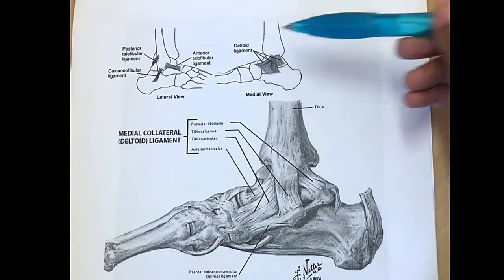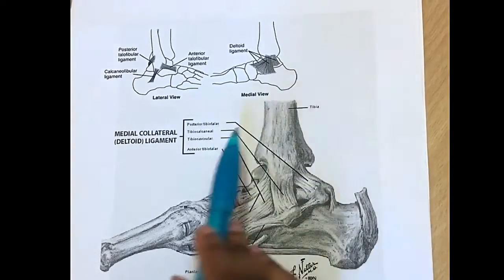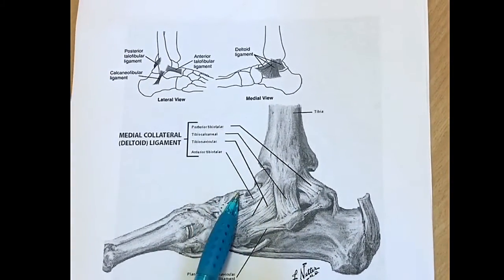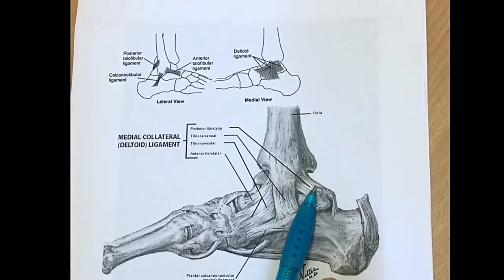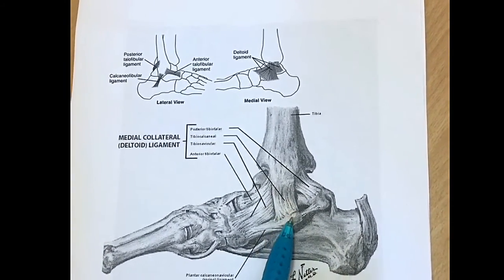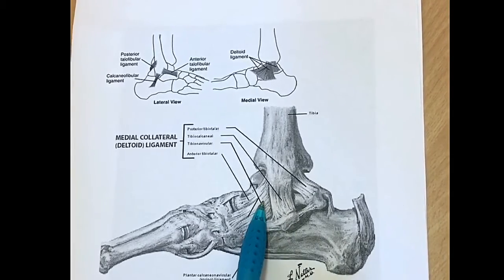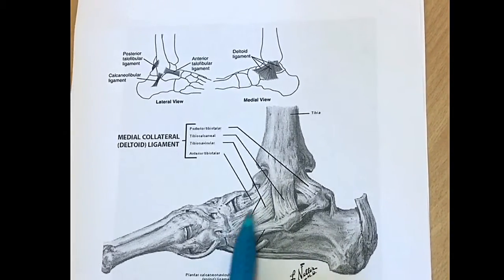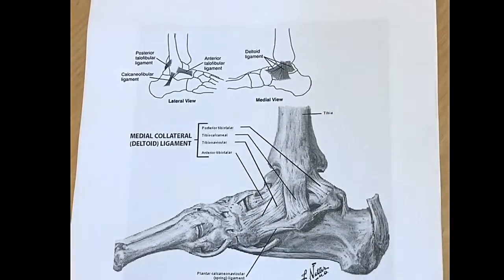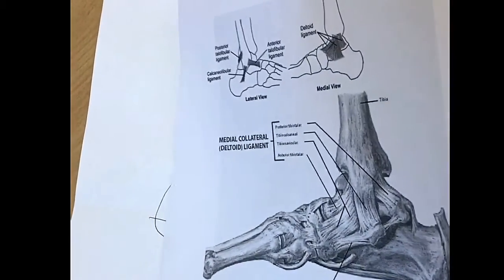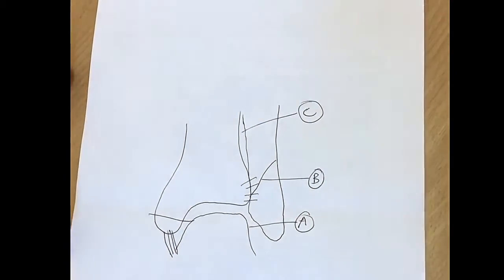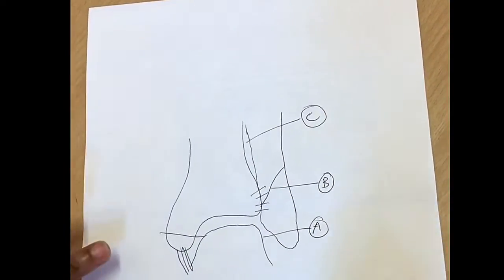The deltoid ligament is made up of four separate ligaments: the posterior tibiotalar, the tibiocalcaneal, the tibionavicular, and the anterior tibiotalar ligaments.